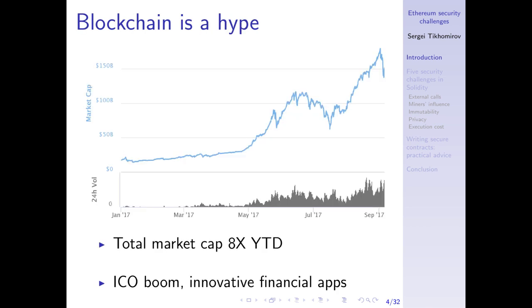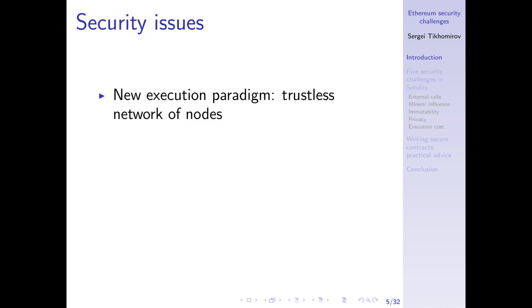As you might already know, blockchain is very hot right now. The total market capitalization of all cryptocurrencies has increased eightfold since the beginning of 2017. We see the boom of initial coin offerings and other innovative financial applications. But new technologies and new innovations cannot happen without some security issues. Ethereum introduced a new execution paradigm — this trustless network of nodes that execute code in parallel.